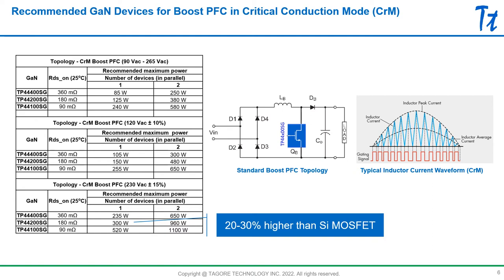Another thing to notice is that when you go from universal input range — that is the top table — to a single input range, either 120 volts or 230 volts AC, you can again expect an increase in power level for a given RDS on. This shows more prominently in the 230 volt application because the current levels are lower. For example, with 180 milliohms, the 300 watts available with a single input range is about 20 to 30 percent higher than a similarly rated silicon MOSFET device. That's one of the benefits GaN provides in this type of application, and as you go to higher power levels, this benefit becomes even more pronounced.